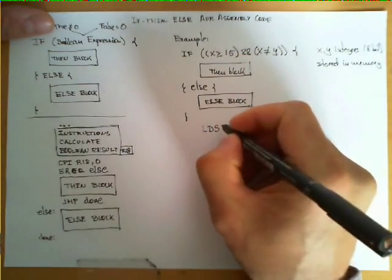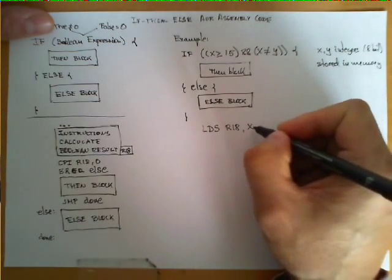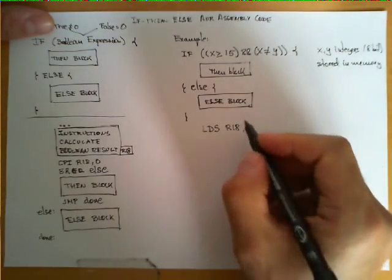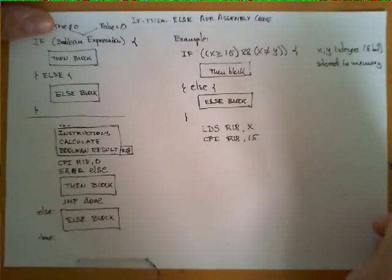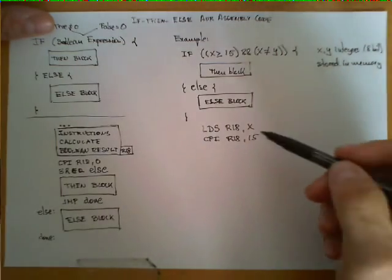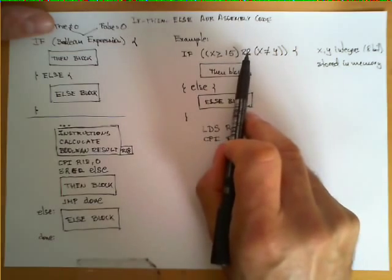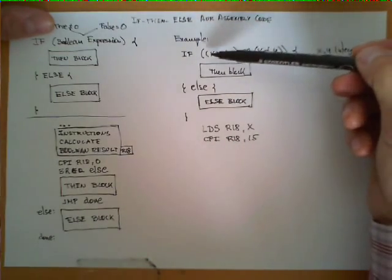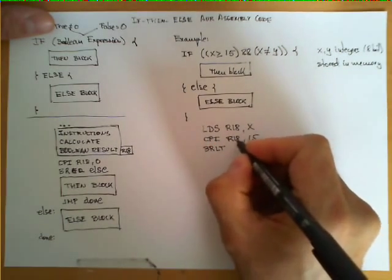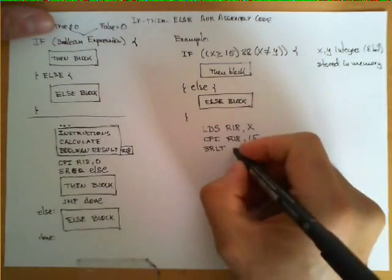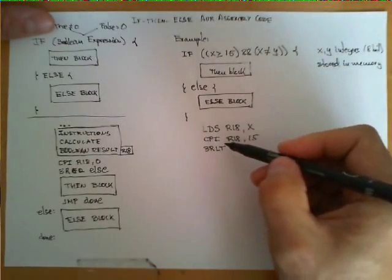The first instructions evaluate the sub-expression x >= 15. We load from memory into register R18 the value at memory location x. Then we compare this value with the constant 15 using the CPI (compare immediate) instruction. An interesting thing happens here: if this condition is false, since it is part of a conjunction, a false result immediately tells us to execute the else-block. This condition being false means R18 is lower than 15, so BRLT is the ideal instruction — it makes us jump to the else-block.